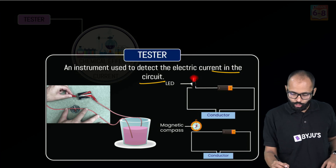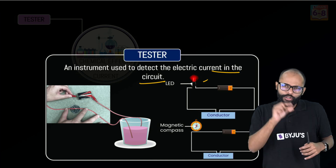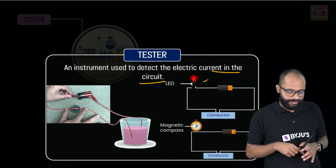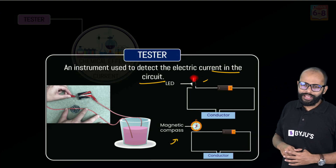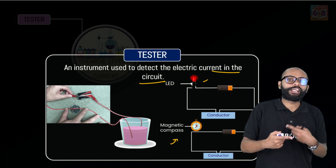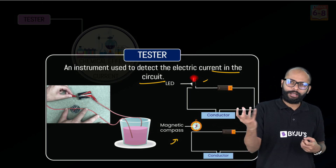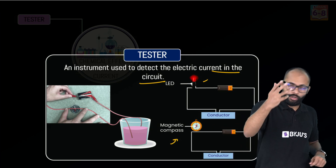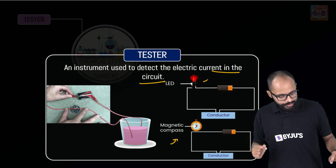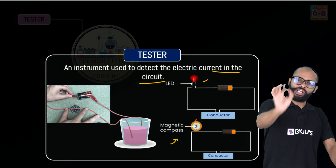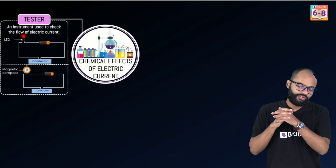How can the tester work? A tester can be of two types. One is an LED-type tester like the electrician has — there is a bulb which glows if current is present. But if the current value is very small, the LED might not glow. So another way is to use the magnetic effect of electric current: a current-carrying wire produces a magnetic field, so if we place a compass near it, the needle will show deflection. These are the two principles we can use to check if current is flowing in a circuit.